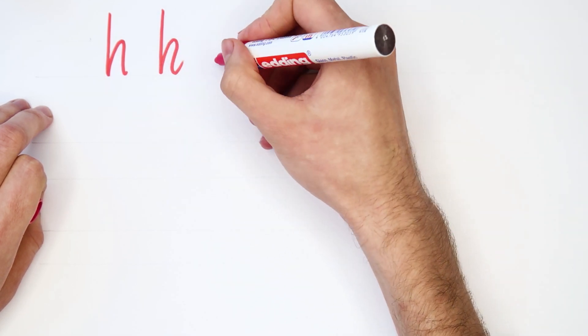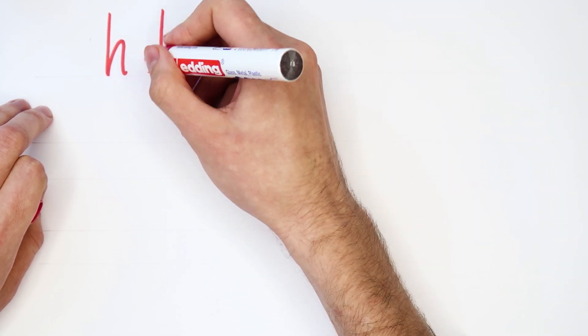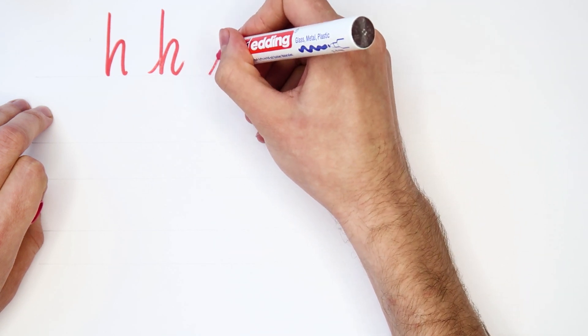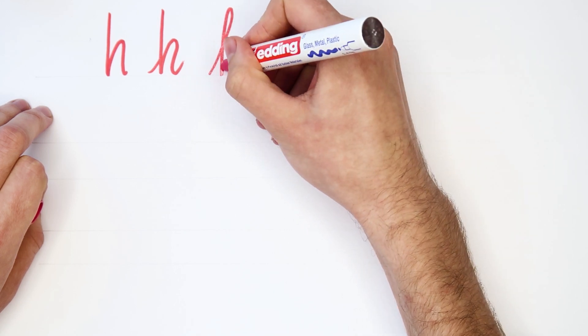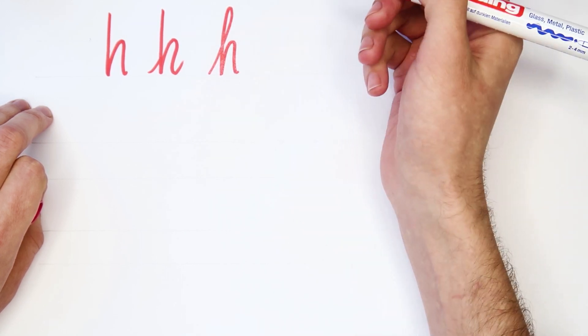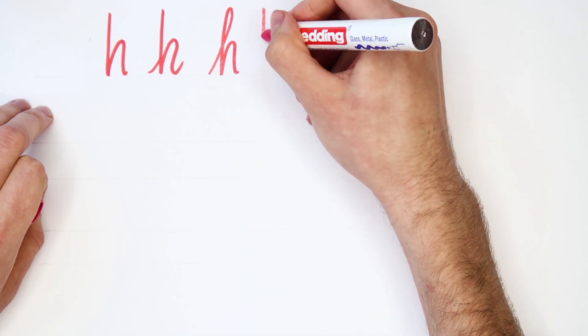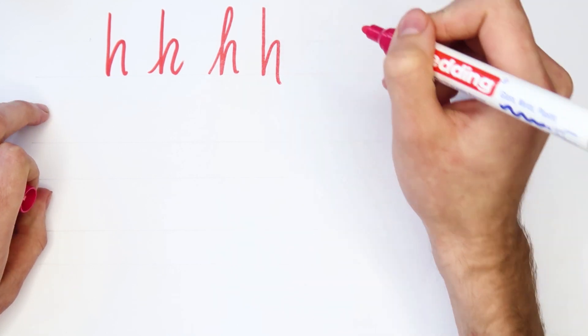Okay also you can connect it with other letters not just like this for example from an A but using this technique here. And also I like sometimes to just put it a little bit down here. I will show you what I mean when we get to practice.